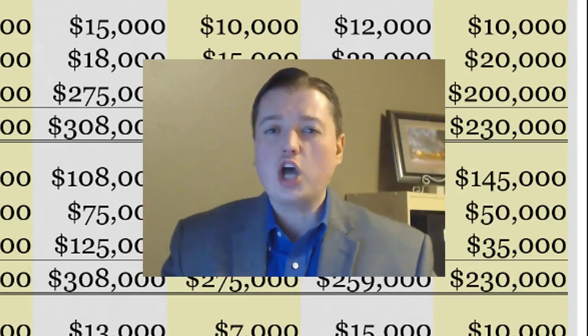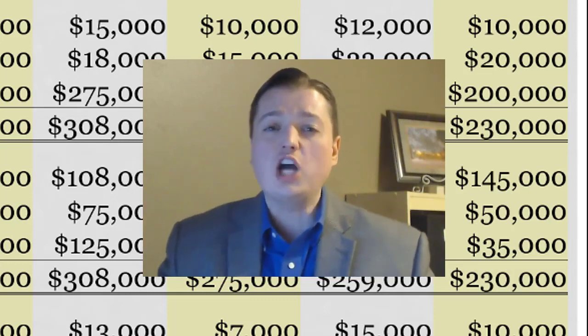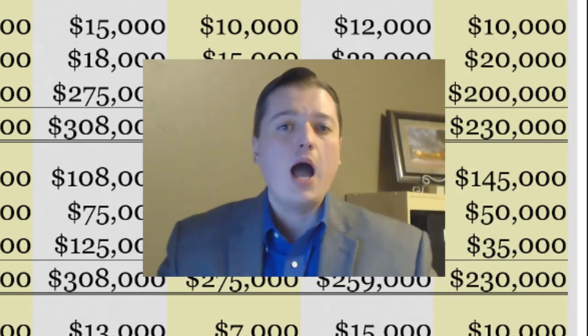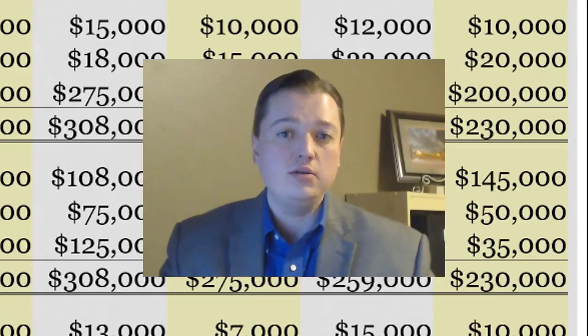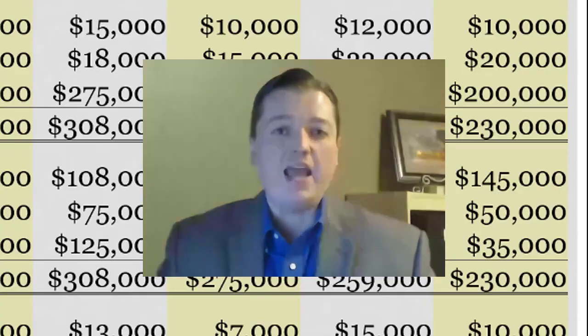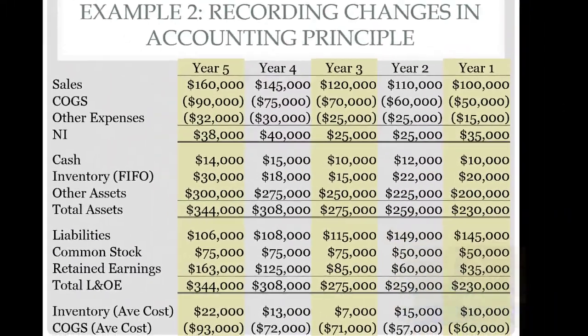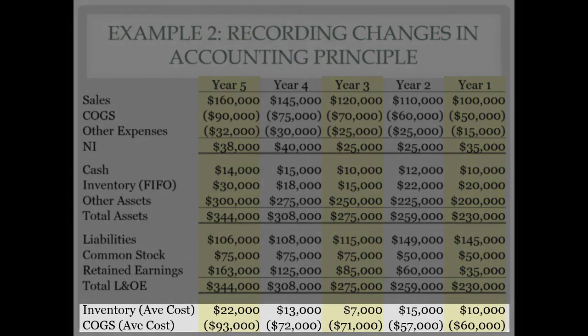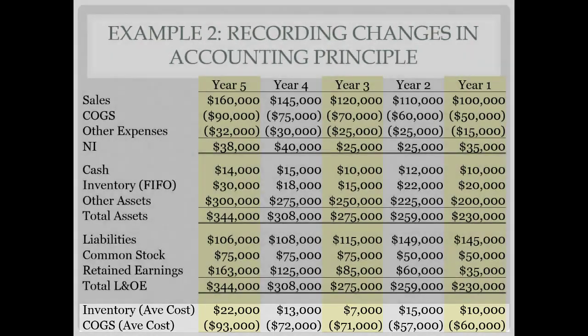We started talking about changes in principle. We've talked about why they happen, discussed them conceptually, and started working a problem about a change in accounting principle. In this case we're working with DSI incorporated, which decided to switch from FIFO to average cost. We gave you the calculations for step one which was to recalculate all of the accounts affected by the change.